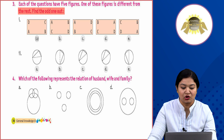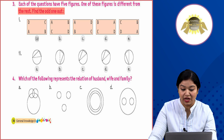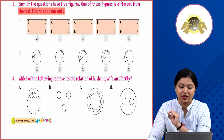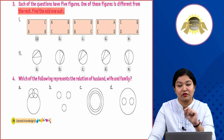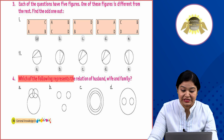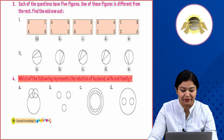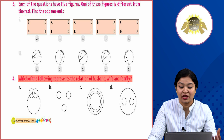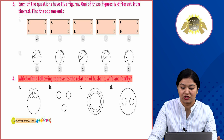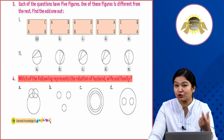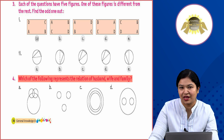Which of the following represents the relation of husband, wife, and family? Some figures are given and you need to identify which figure represents the relation of husband, wife, and family. The correct answer is D. In D, you have the family, and inside it husband and wife are part of this family — it shows they are a part of the family.